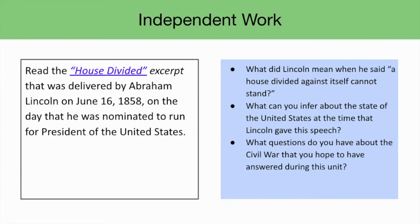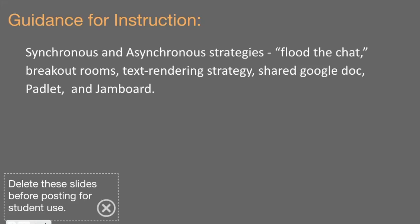For the independent work, the directions for students say to read the House Divided excerpt that was delivered by Abraham Lincoln on June 16, 1858, on the day that he was nominated to run for President of the United States. We've also included some guiding questions: What did Lincoln mean when he said a house divided against itself cannot stand? What can you infer about the state of the United States at the time that Lincoln gave the speech? And what questions do you have about the Civil War that you hope to have answered this unit? Synchronous and asynchronous strategies include flood the chat, breakout rooms, a text rendering strategy, a shared Google Doc, Padlet, and Jamboard.